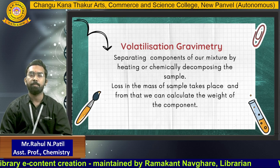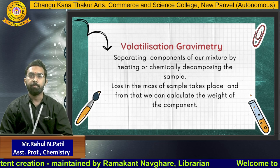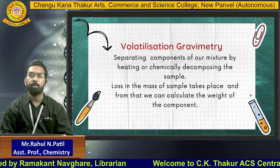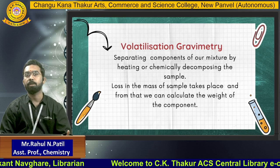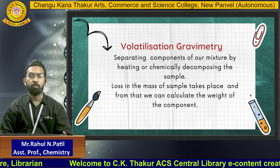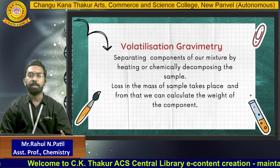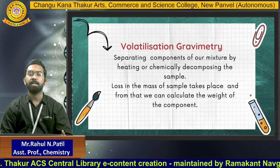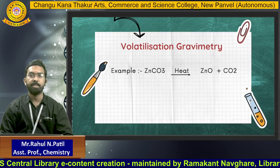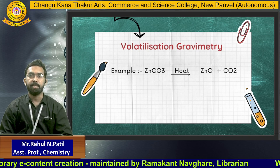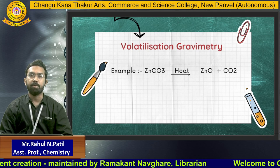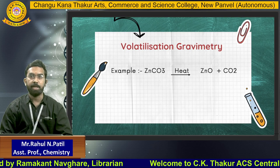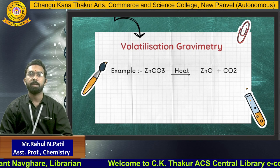In volatilization gravimetry, a mixture of two compounds is placed in a crucible and heated continuously for 25-30 minutes. One compound evaporates and the other remains in the crucible. By taking the weight at the end, we can determine how much evaporated and which compound remained. For example, when zinc carbonate is heated continuously, it converts into zinc oxide and carbon dioxide — zinc oxide remains in the crucible and CO2 evaporates, allowing separation.